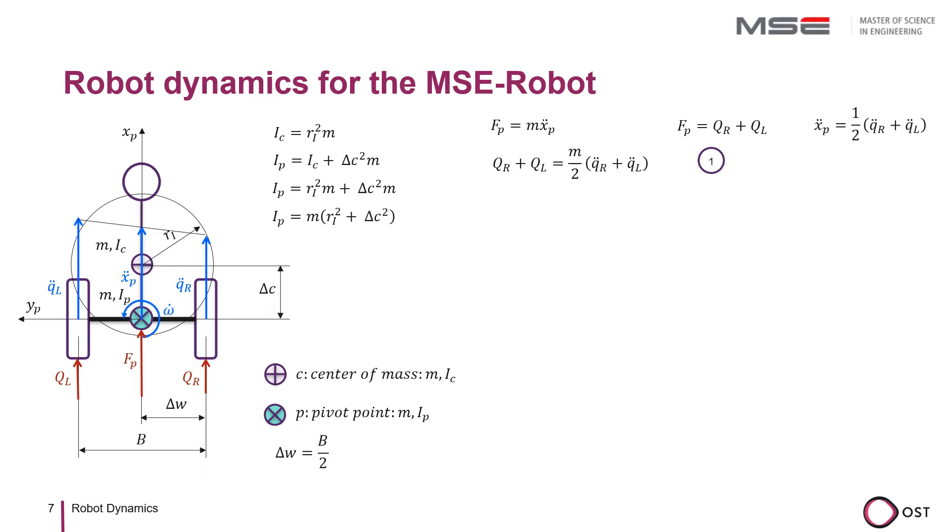Let us now set up the angular momentum theorem. Delta W times QR produces a positive torque and delta W times QL produces a negative torque. According to Newton, the sum of torques is equal to the rotational acceleration times the rotational moment of inertia, IP. The rotational acceleration is the difference between the wheel accelerations divided by the wheel distance, which in our case is 2 times delta W. By inserting this equation, we obtain another relationship between wheel accelerations and wheel forces. We insert IP and divide the equation by delta W. We then simplify the equation by introducing a factor alpha, with which we express and describe the distribution of inertia. This gives us the second dynamic relationship between forces and accelerations of the wheels.